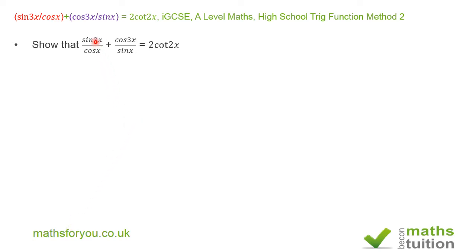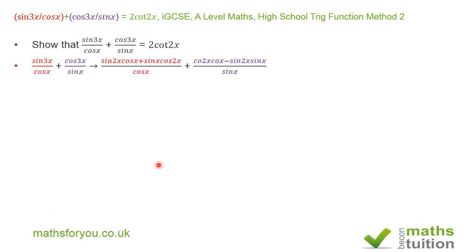What I'm going to do is expand sin(3x) and cos(3x) using the compound angle formula. So for the red term on the left hand side I have sin(2x)cos(x) plus sin(x)cos(2x), all divided by cos(x). For the purple term I have cos(2x)cos(x) minus sin(2x)sin(x), all over sin(x).